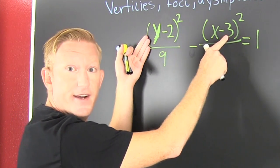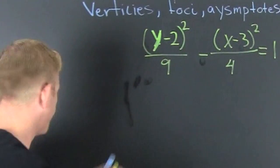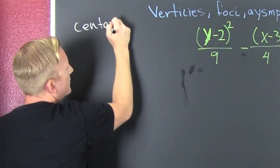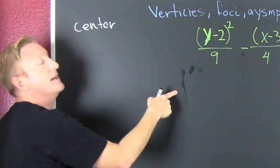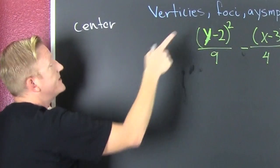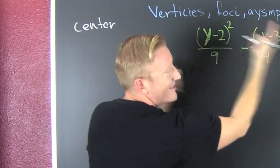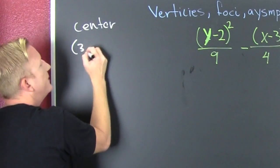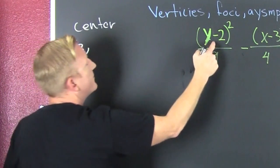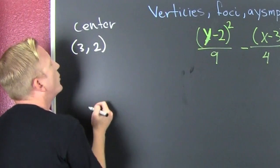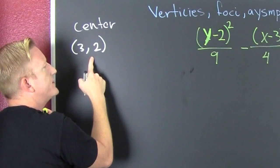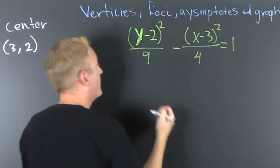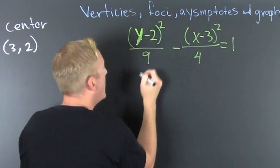We need the center. The center — notice they're switched — it's the opposite of x, so that's 3, and the opposite of y, so that's 2. So now we've found our center at (3, 2). What else do we need? We need our a and our b.